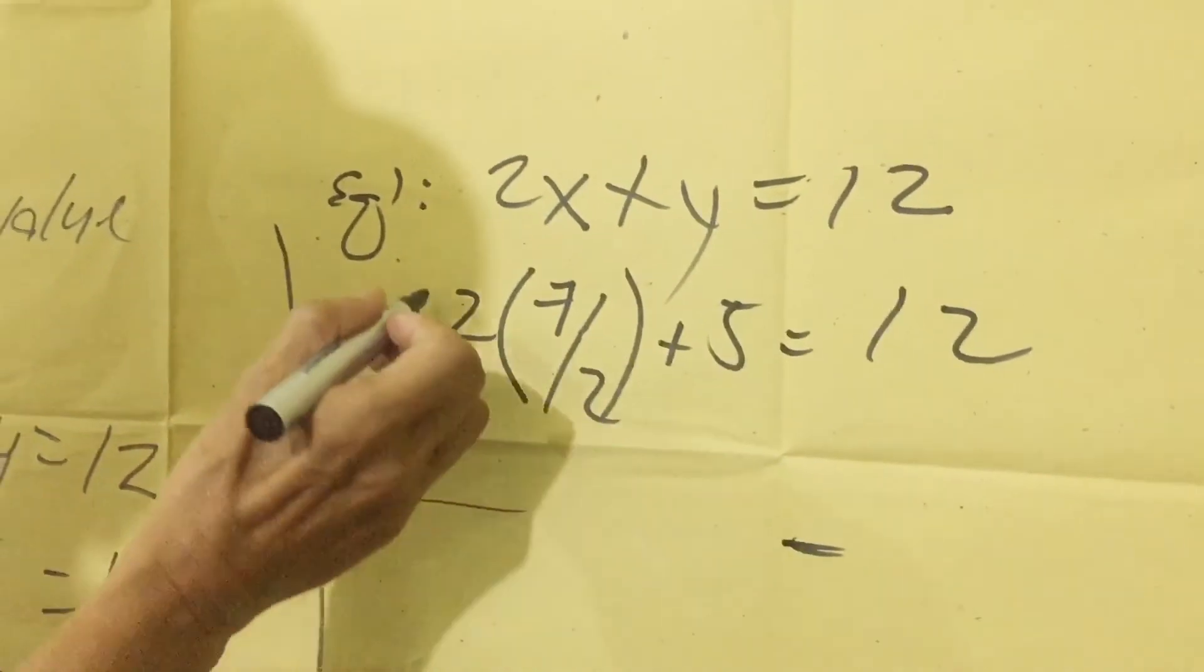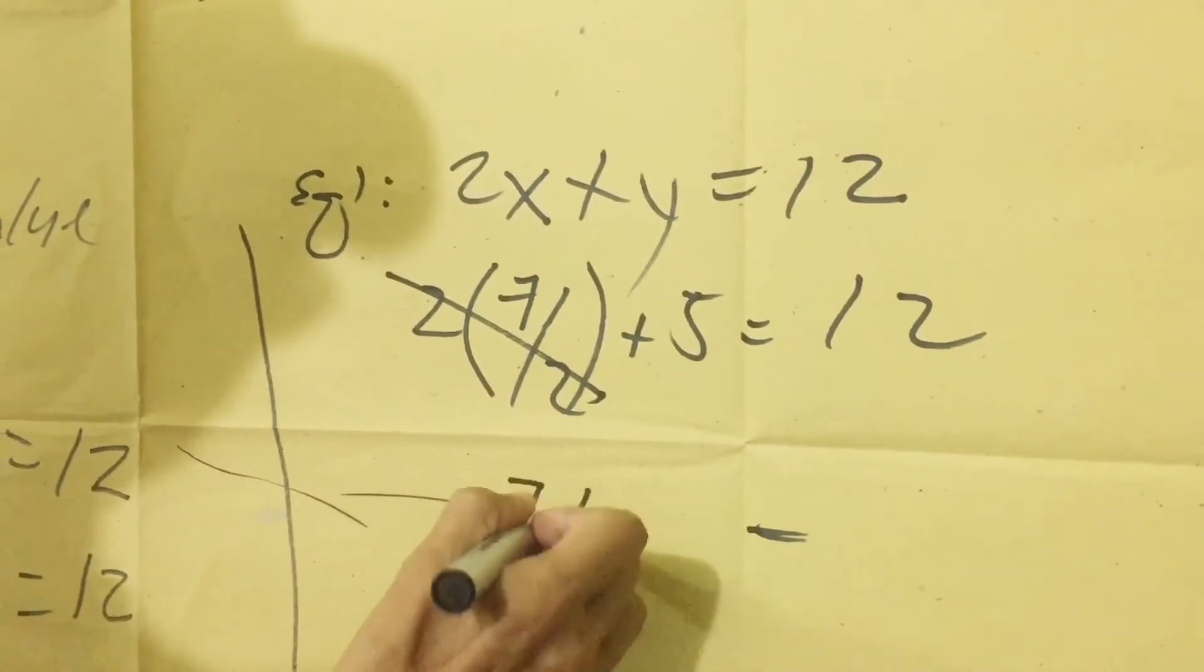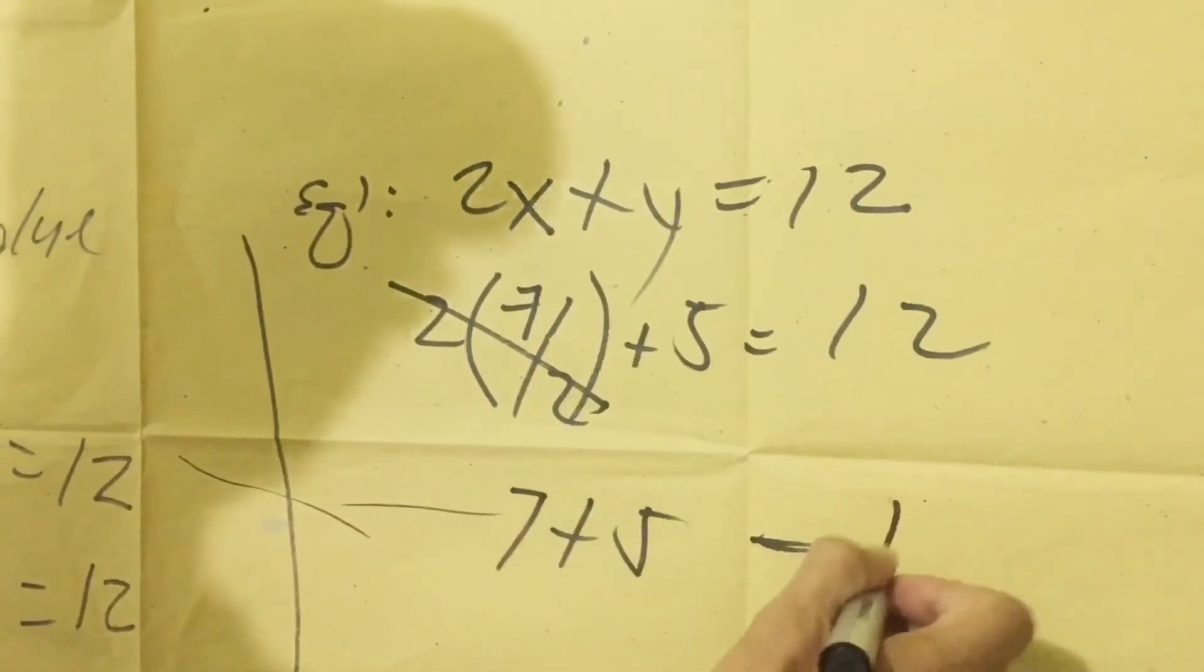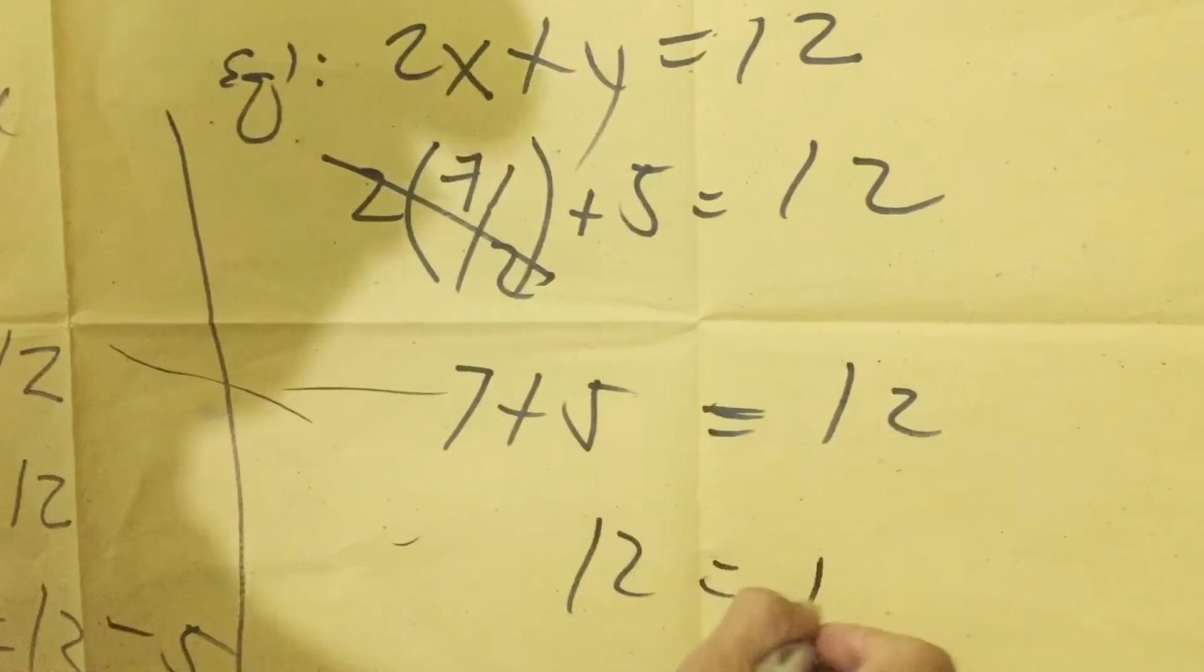Copy 12. Then since the division is the same, we have to cancel that. So the remaining is 7. Then plus 5 equals 12. Then 7 plus 5 equals 12 equals 12.